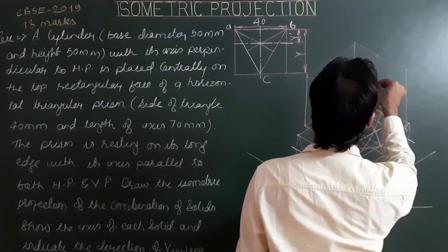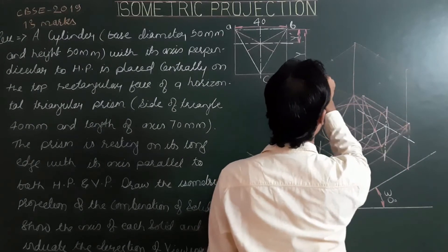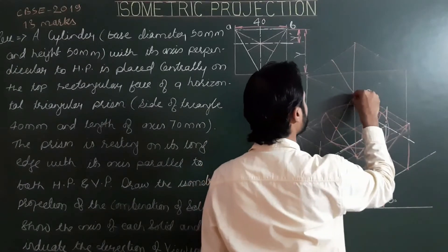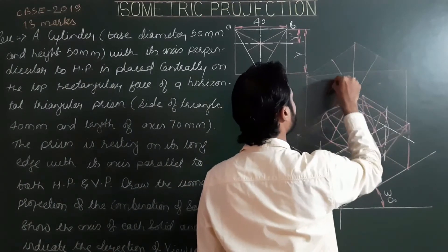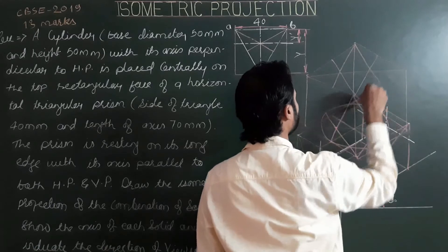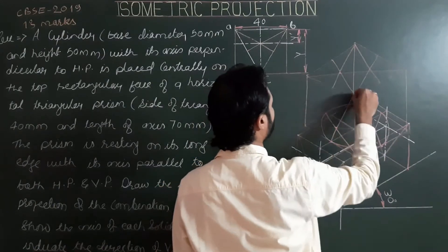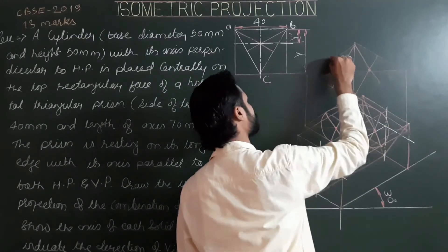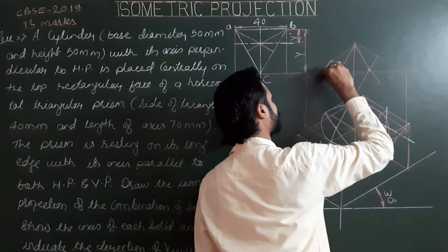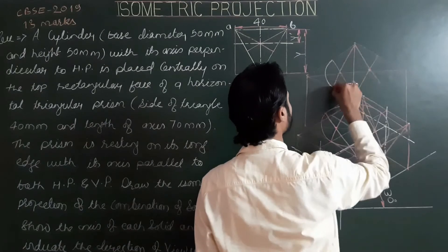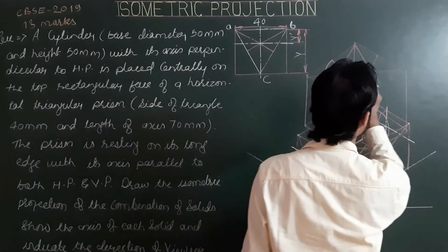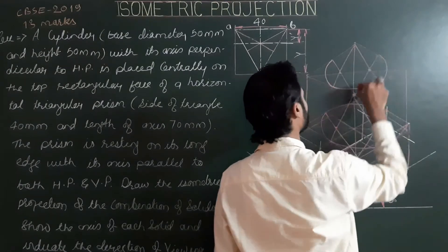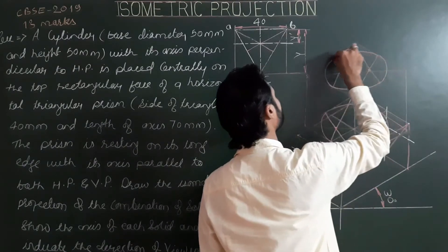Repeat the process for the upper base: bisect all four sides, draw the longer diagonal, then midpoint to opposite corner for each side to get all four centers. From the first center use the first radius, second center the second radius, third center the third radius, and fourth center the fourth radius to complete the upper circular base of the cylinder.